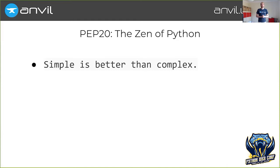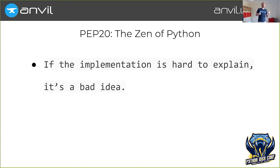How does that stack up against the Zen of Python? Simple is better than complex — who can look at that with a straight face and call it a simple system? If the implementation is hard to explain, it's a bad idea. How does the inside of React work? How does the inside of SQLAlchemy work? These are not easy to explain systems.